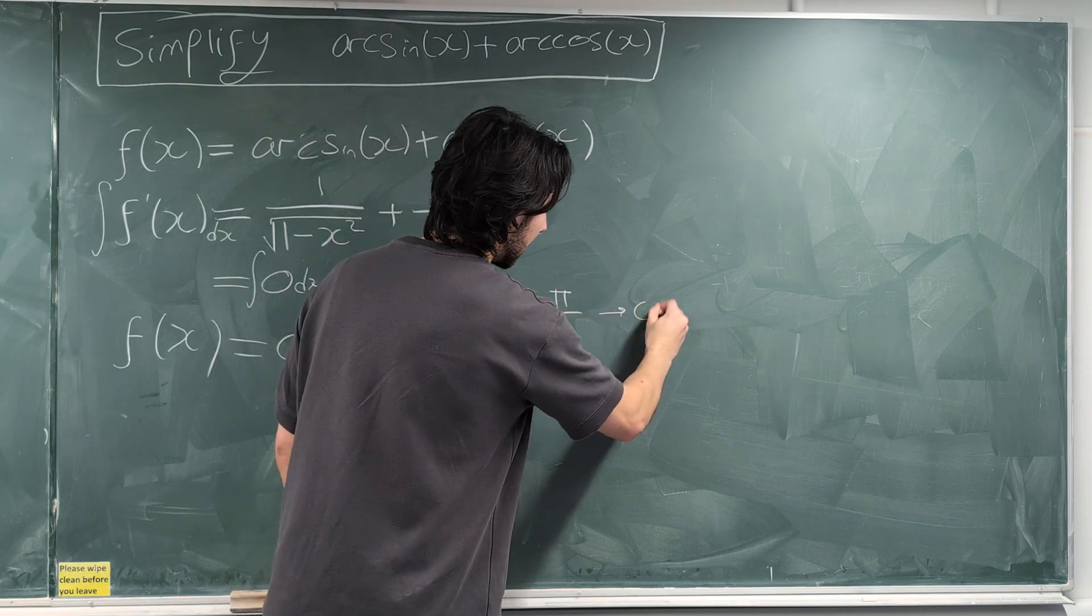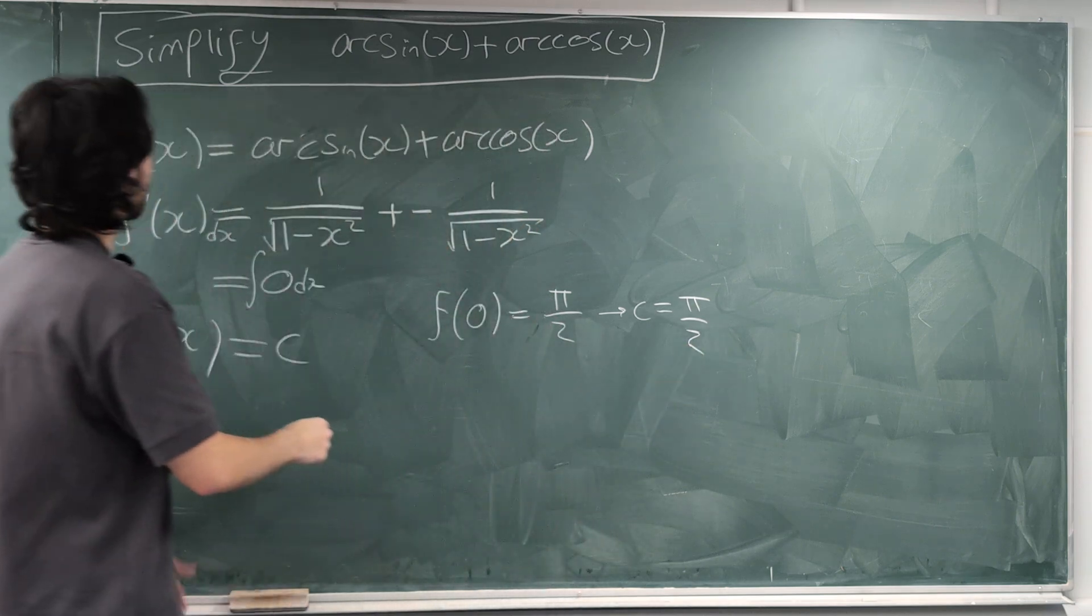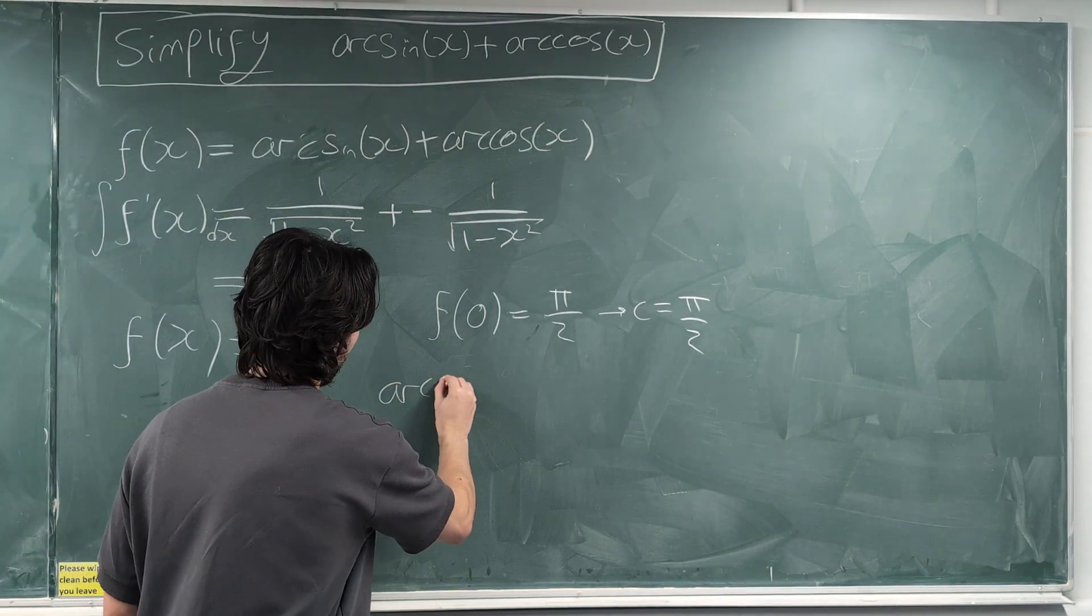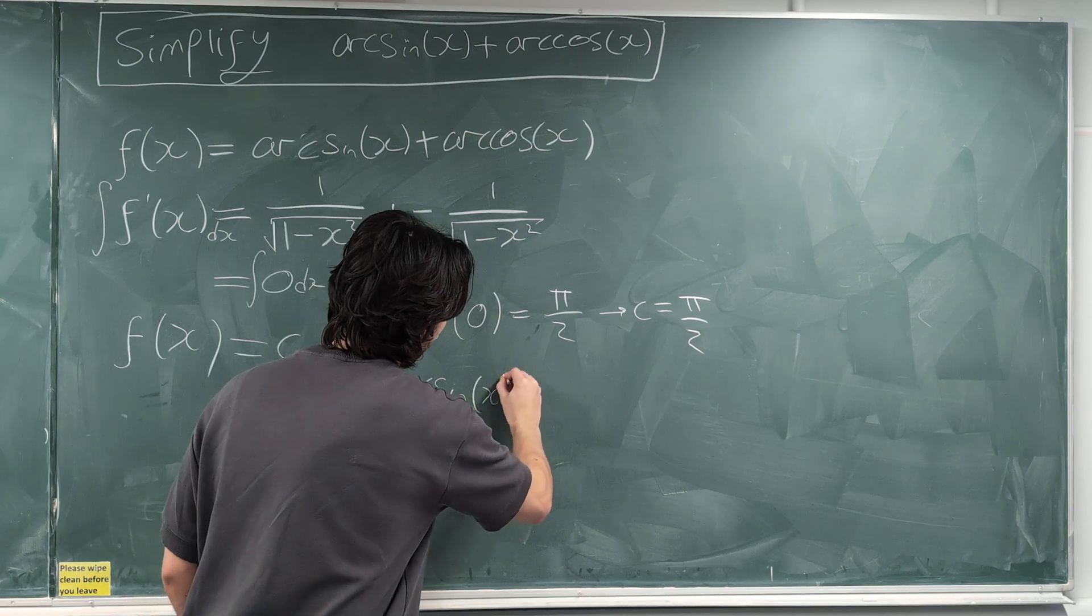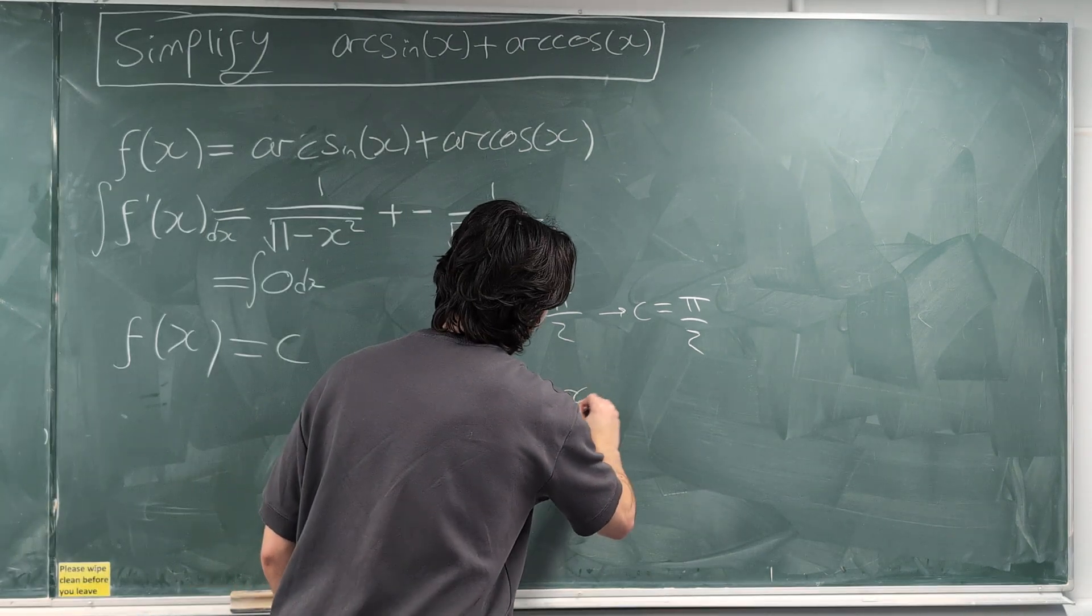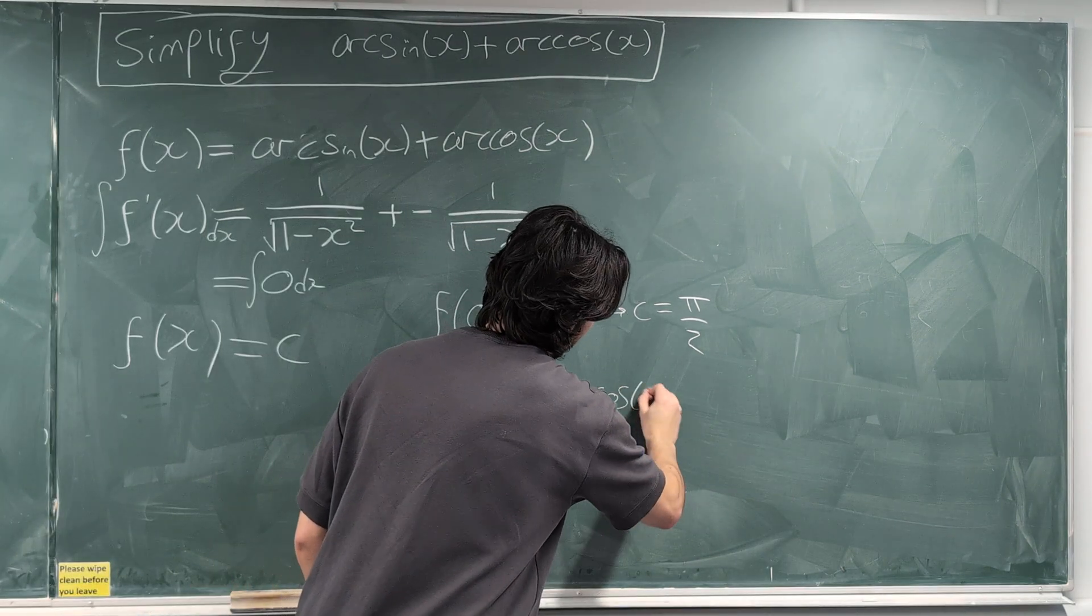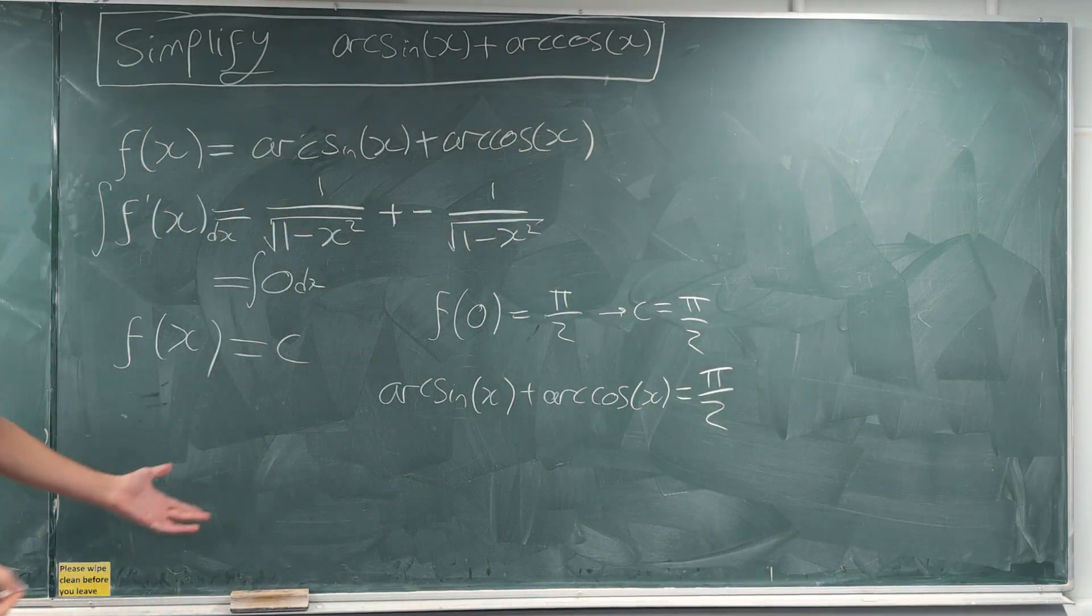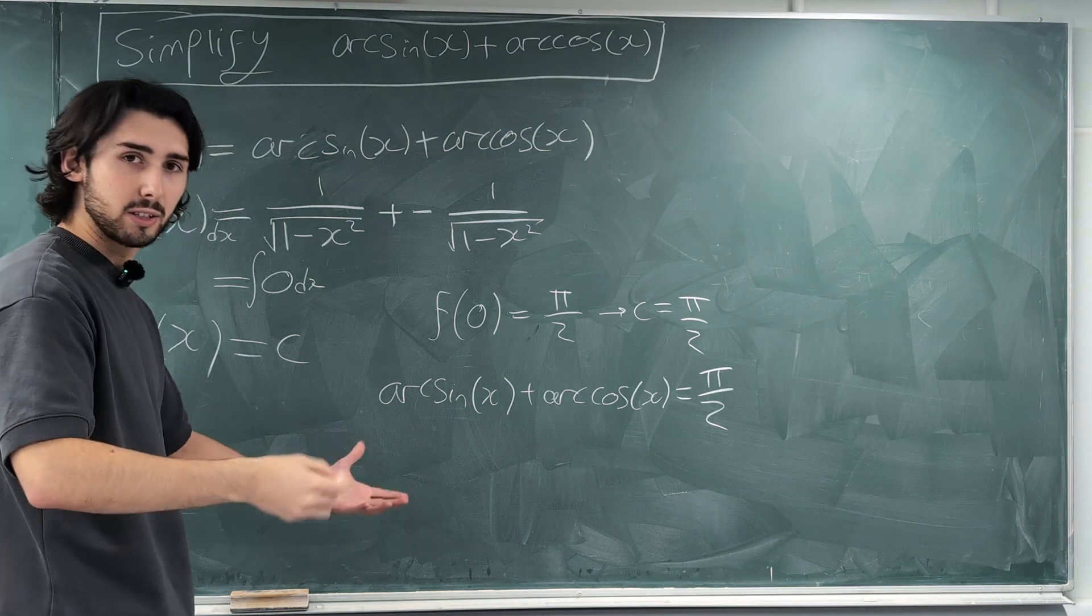So, c is π/2, which means that arcsin(x) + arccos(x) is equal to π/2 for all values that you can plug into this.